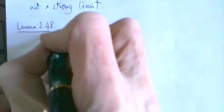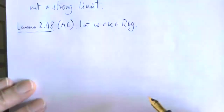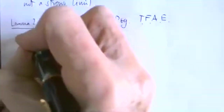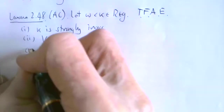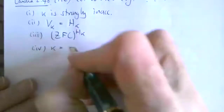So let's look at Lemma 2.4.8. I'll emphasize that we're using AC here. Pick an uncountable regular cardinal kappa. Then the following are equivalent: (1) kappa is strongly inaccessible; (2) V_kappa equals H_kappa; (3) all the axioms of ZFC hold in H_kappa; and (4) kappa equals beth_kappa.